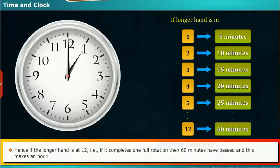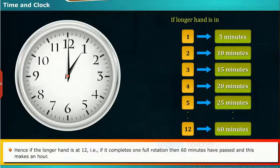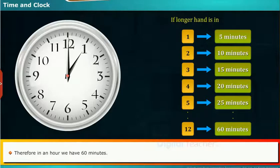Hence, if the longer hand is at 12, that is, if it completes one full rotation, then 60 minutes have passed and this makes an hour. Therefore, in an hour we have 60 minutes.